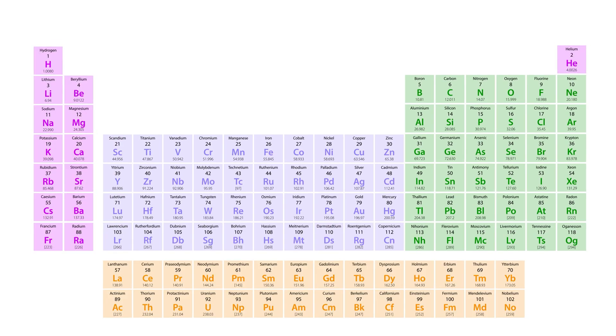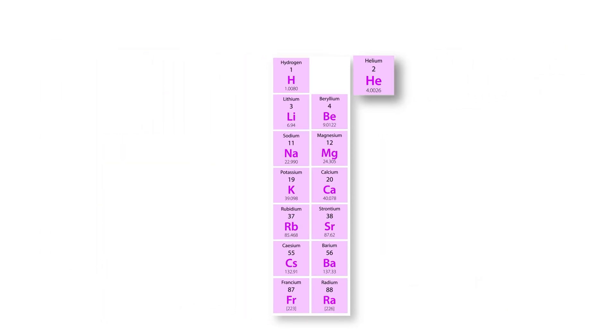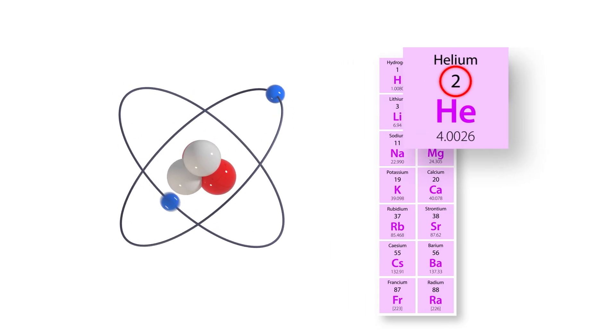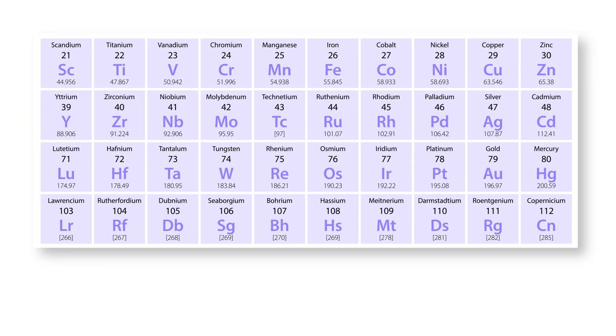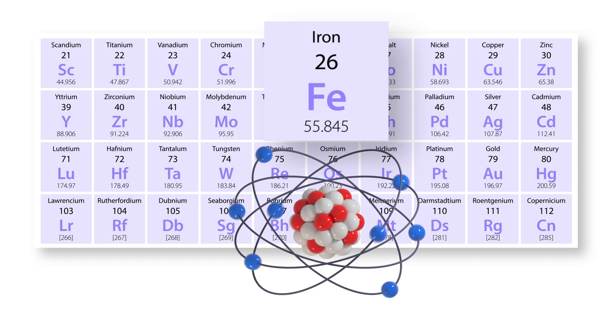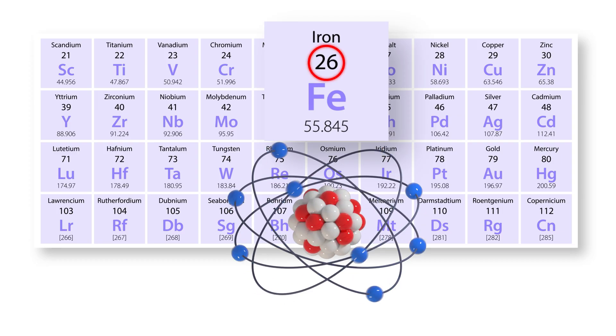Let's look at a few examples. Helium has an atomic number of two, therefore it has two protons. Iron has 26 protons, so its atomic number is 26.